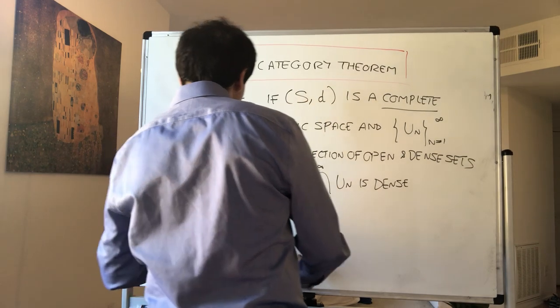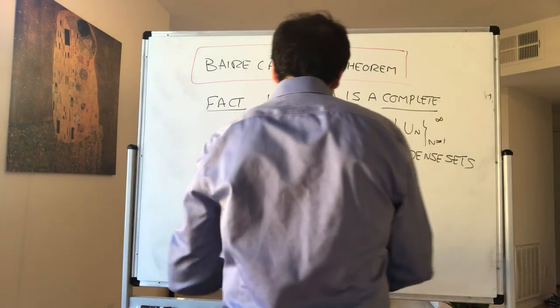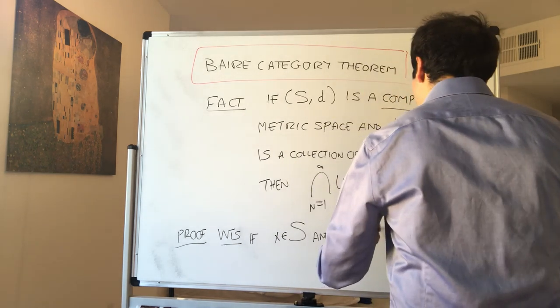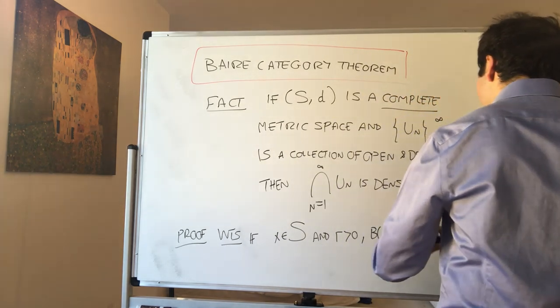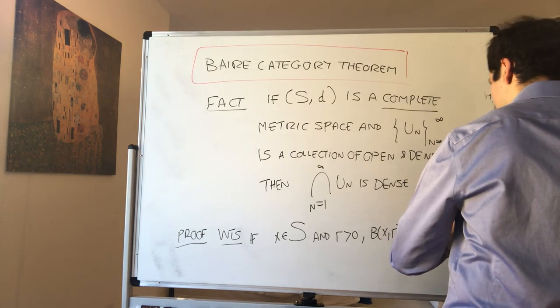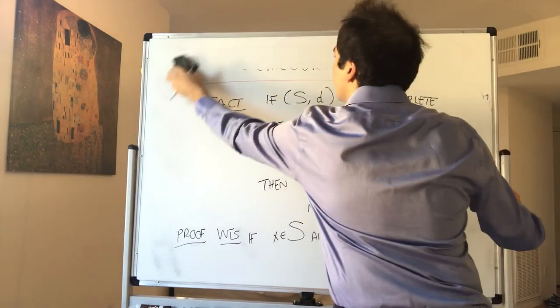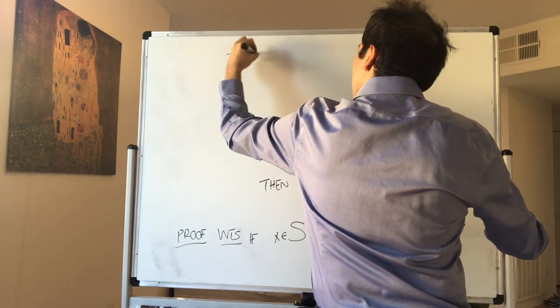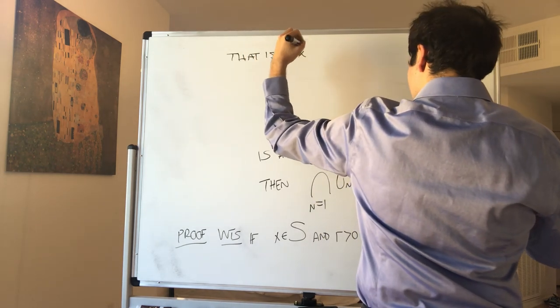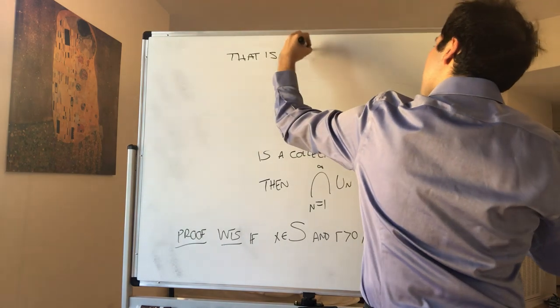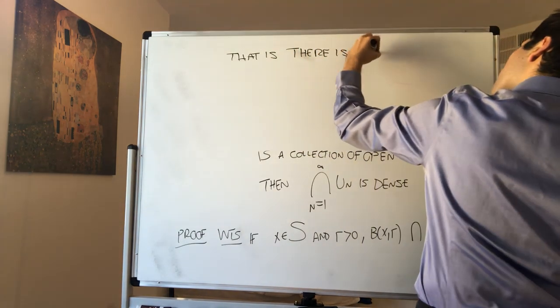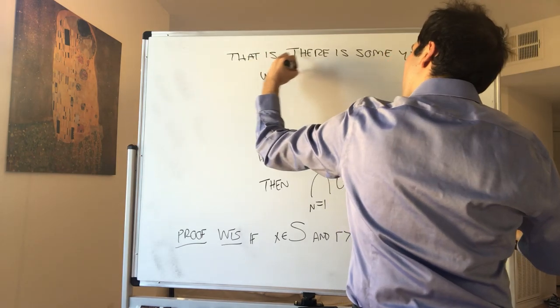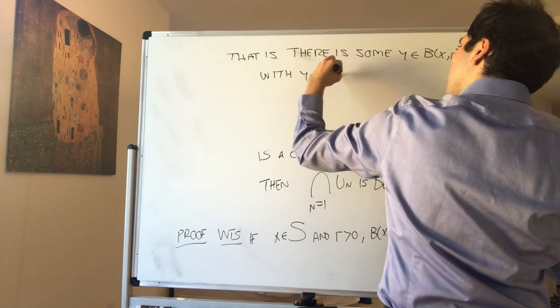What do we want to show? We want to show if x is in S and r is positive, then the ball centered at x and radius r intersects all those un's. That is, there is some y in B(x,r) with y is in un for all n.